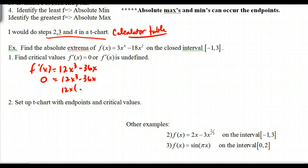12x cubed minus 36x. Pull out a 12x. So I get x squared minus 3 is equal to 0. So I have my following critical values. x is equal to 0 and plus or minus square root of 3.